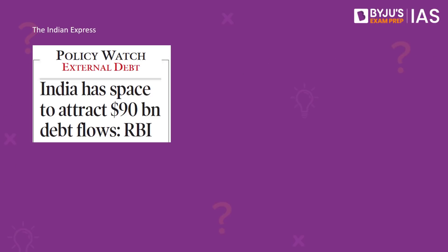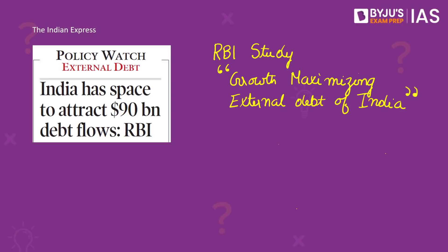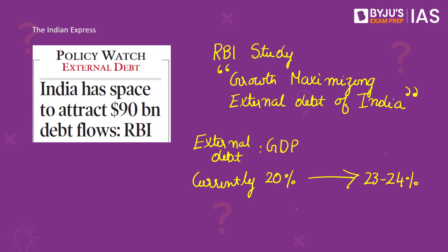This article in today's The Indian Express analyzes the recent study carried out by the Reserve Bank of India. This study, named 'Growth Maximizing External Debt of India,' notes that India's external debt to GDP ratio is currently 20% and says that this can be increased up to 23 to 24% based on this analysis. The study suggests that India still has space to attract more debt flows of around 90 billion US dollars, calling for balancing the objective of growth as well as macro stability.